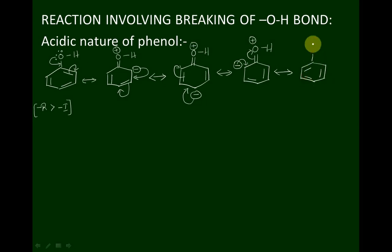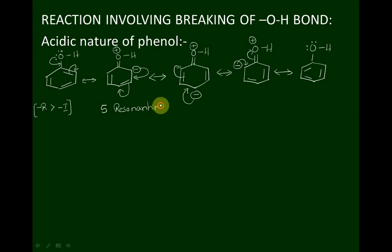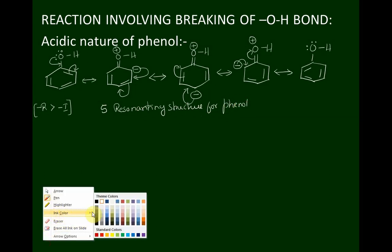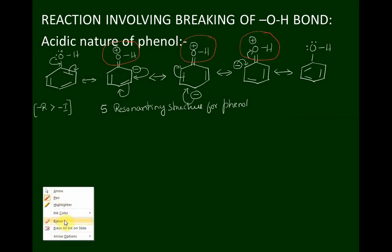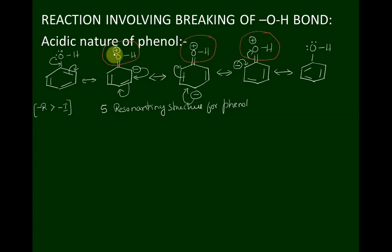Due to conjugation of the benzene ring, we can represent a total of five resonating structures for phenol. In three of these resonating structures, the oxygen atom carries a positive charge. Due to oxygen being more electronegative in nature, if it carries a positive charge it becomes unstable. Therefore, to retain its stability, phenol gives out the H⁺ ion in aqueous solution very easily.